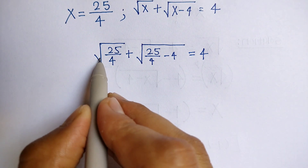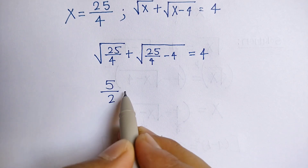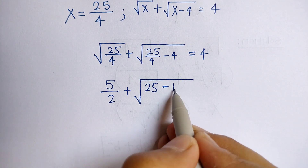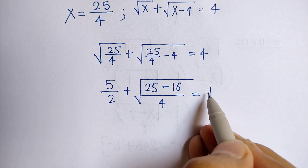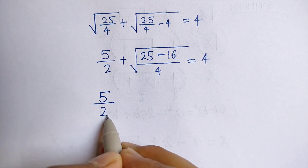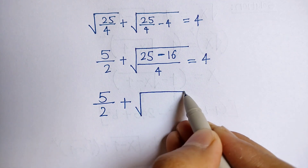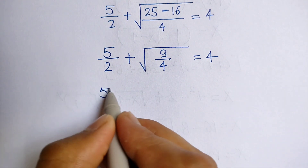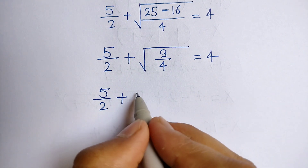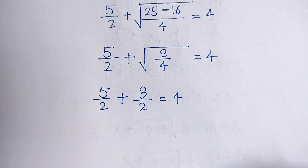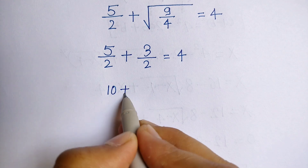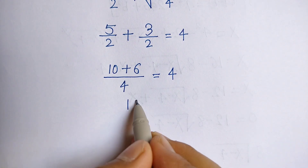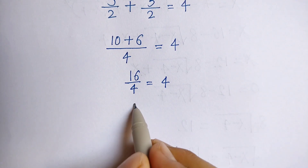Root of 25 upon 4 is 5 upon 2, plus root of 25 minus 16 which is 9 upon 4. Root of 9 is 3 and root of 4 is 2, so we have 5 upon 2 plus 3 upon 2. Solving: 5 into 2 is 10 plus 3 into 2 is 6, over 2 into 2 is 4. So 10 plus 6 is 16 upon 4 equals 4.